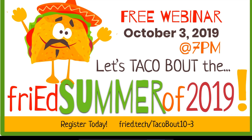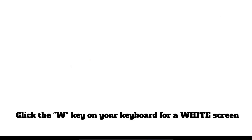During my presentation, if I want to stop looking at the slides on the screen and instead direct the attention of my audience back to me on stage or in the room, I can do two things to take the content off the screen. I can click the W on my keyboard, and now my slide presentation becomes a completely white screen.